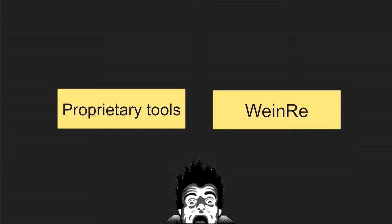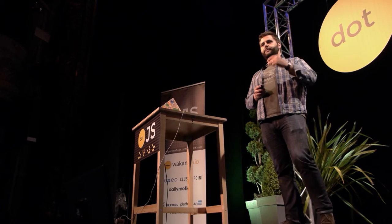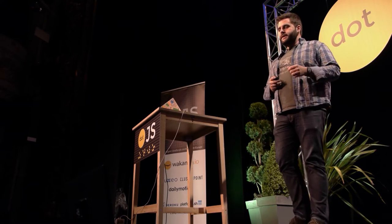But when it comes to mobile, it's a bit different. You have two alternatives. The first one is proprietary tools, but you need to plug your device using USB on your computer. Then you can use Safari to debug Safari for mobile. You can also use Weinre, which is a remote debugger, but it's not really easily extensible, and you have to use a specific browser for the dashboard part.